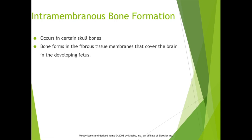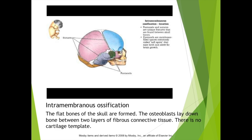Intramembranous bone formation occurs in skull bones, and the bone forms in the fibrous tissue membranes that cover the brain in the developing fetus. The osteoblasts lay down bone between the two layers of fibrous connective tissue — there's no cartilage template. Looking at this image of a human fetus, we can see the brain underneath these connective tissue plates, and then the plates that will eventually become bones start off as fibrous dense connective tissue.